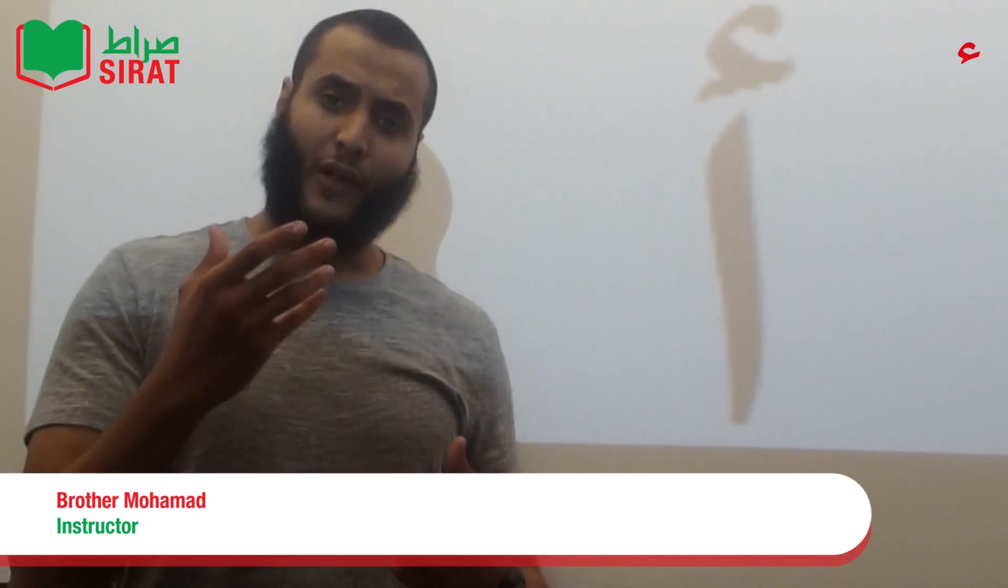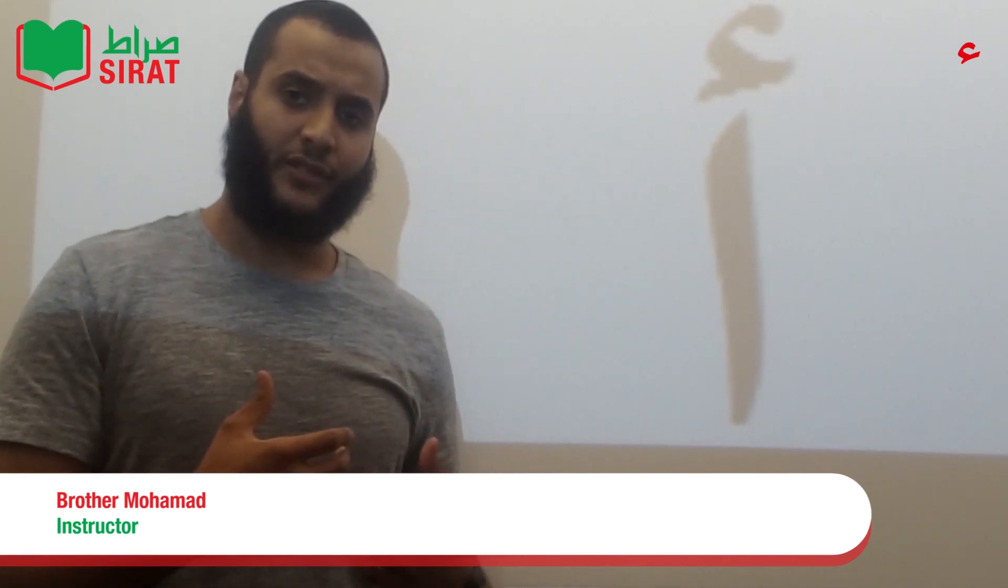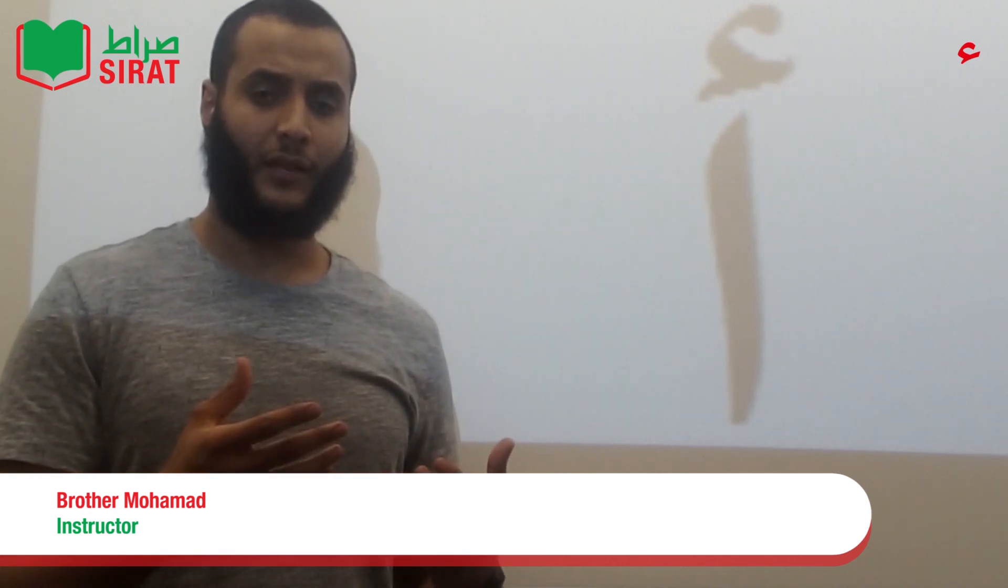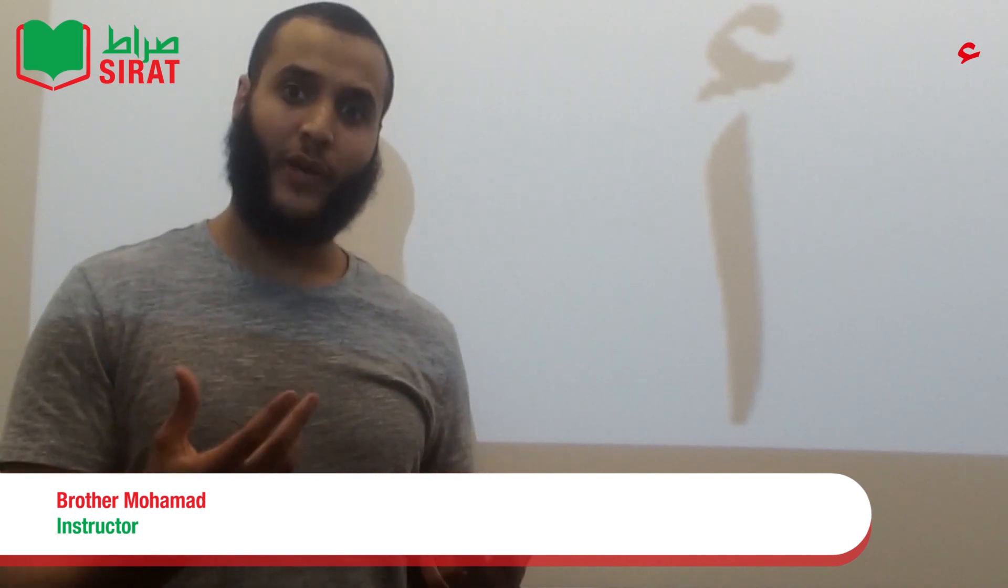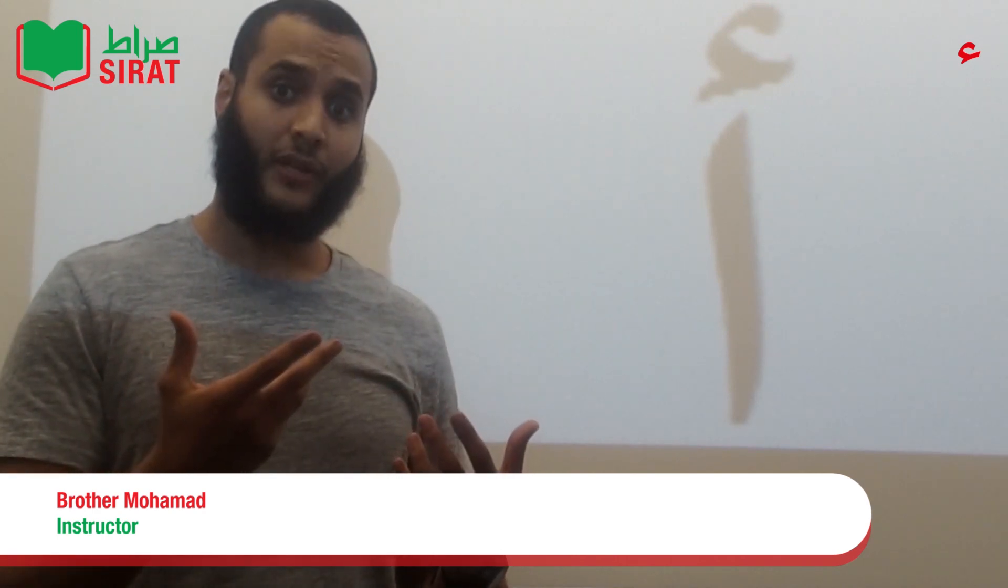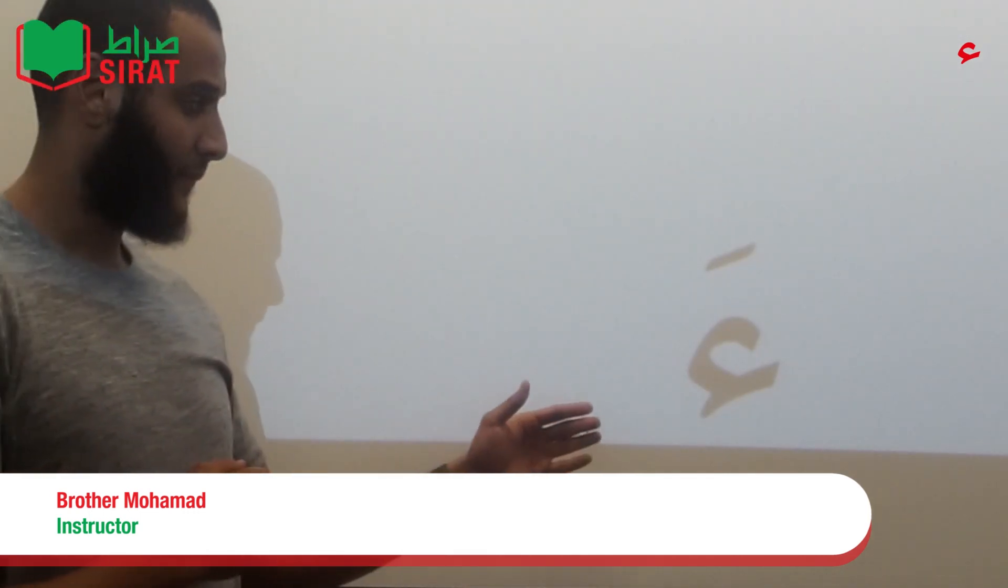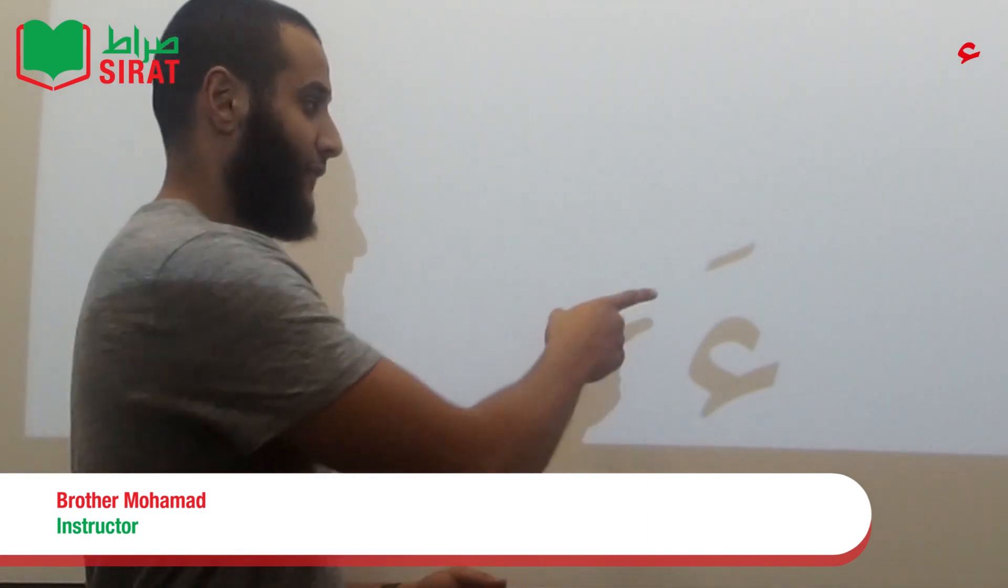Now, the vowel signs which we'll be going through in this series are three. One of them is called a Fathah. Now, Fathah makes the following sound, if it's pronounced with a Hamzah. So this is a Hamzah, as we said, and this is a Fathah.